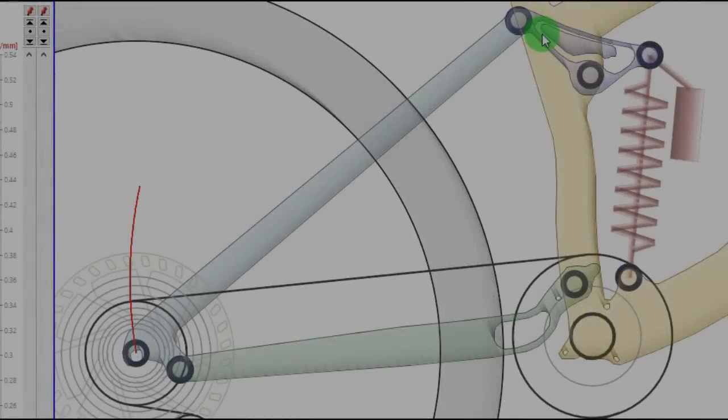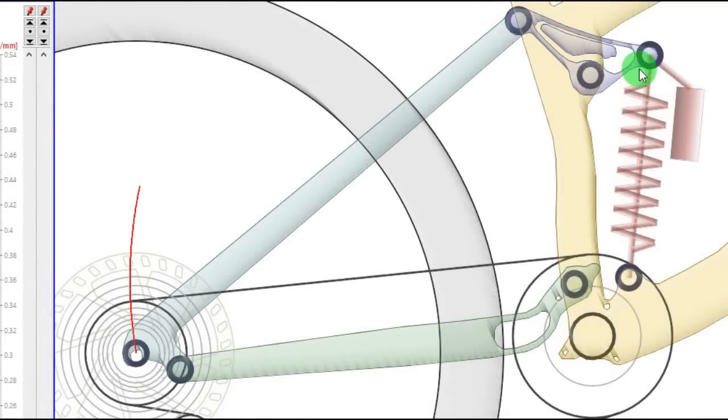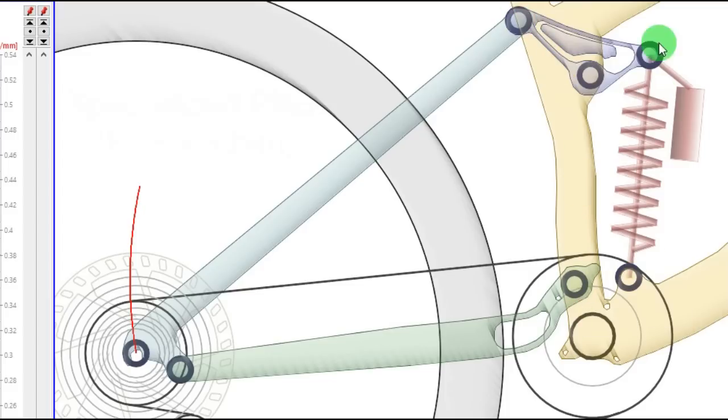In this video I hope to convince you that independently of the type of the suspension system, you can have an infinity of different behaviors just by changing the location of these pivots.